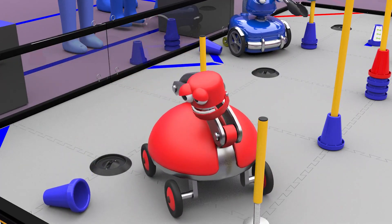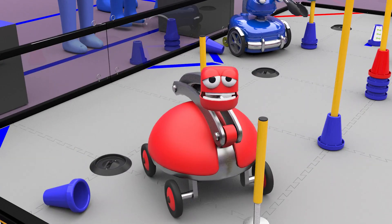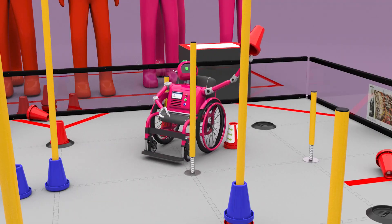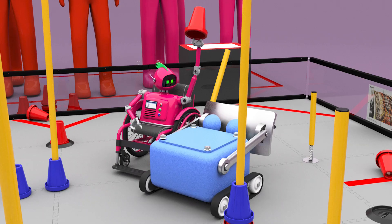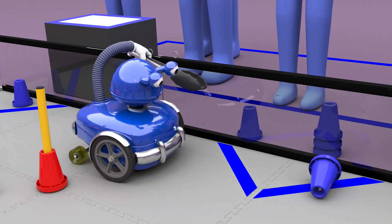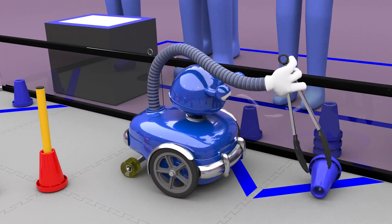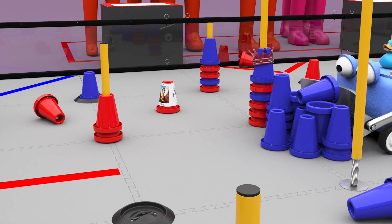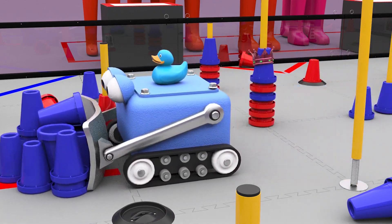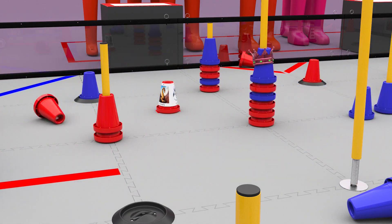robots may not de-score opposing alliance cones or beacons. A robot may not block or interfere with an opposing alliance attempting to score. A robot must be completely outside of a substation in order to score a cone or a beacon. Robots may control or possess only one cone and one beacon at a time.